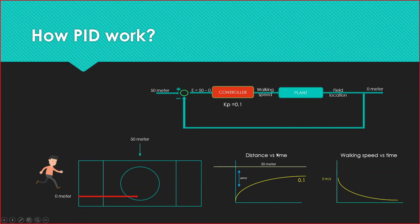Here is a small graph. In these two graphs I want to explain this. Distance vs time, here is distance vs time, here is walking speed vs time. Here is a constant, KP 0.1, it will be 5 meter per second. If this is 0.1 or 0.2, then what will happen?